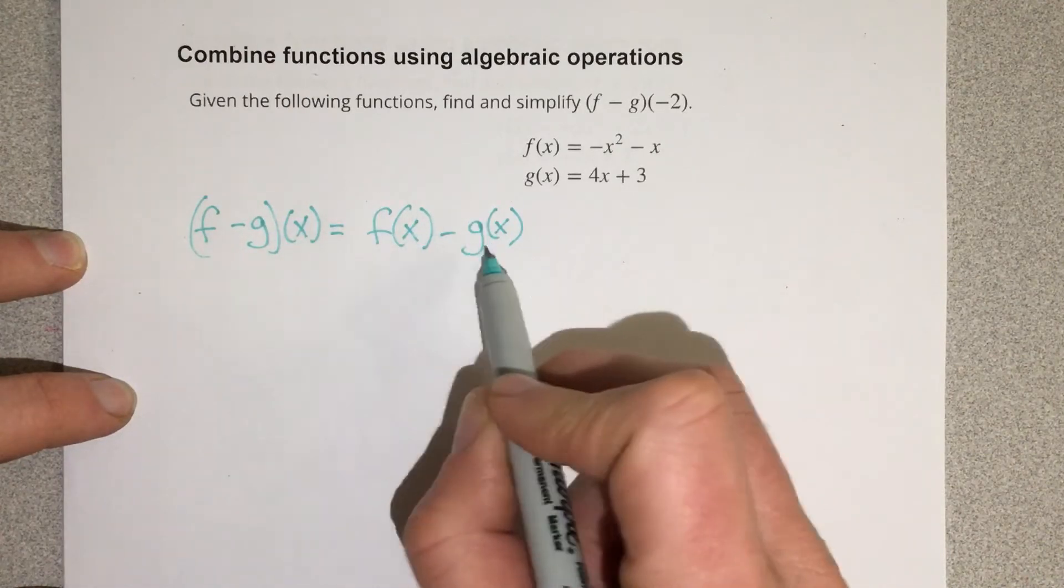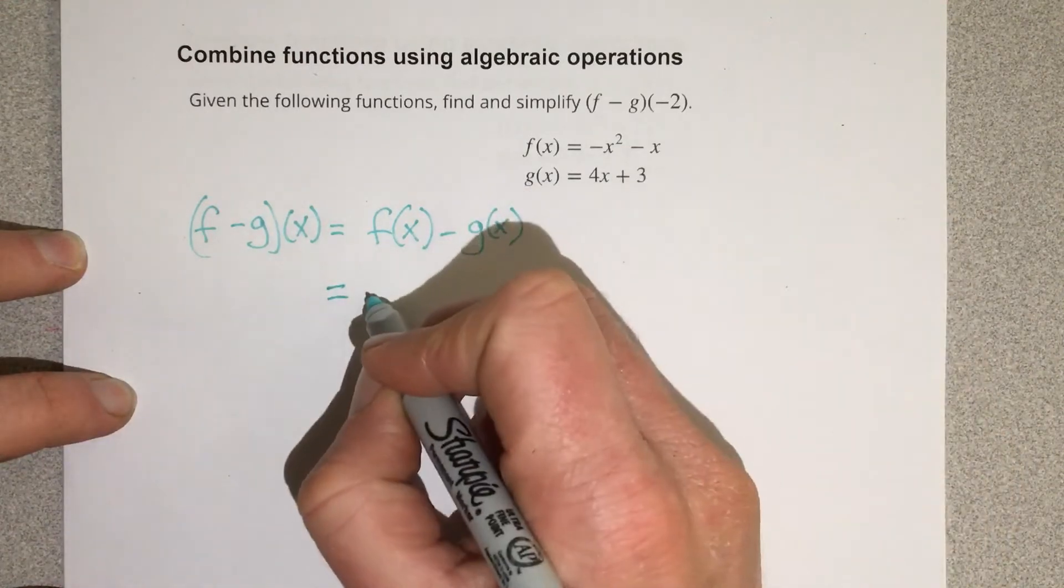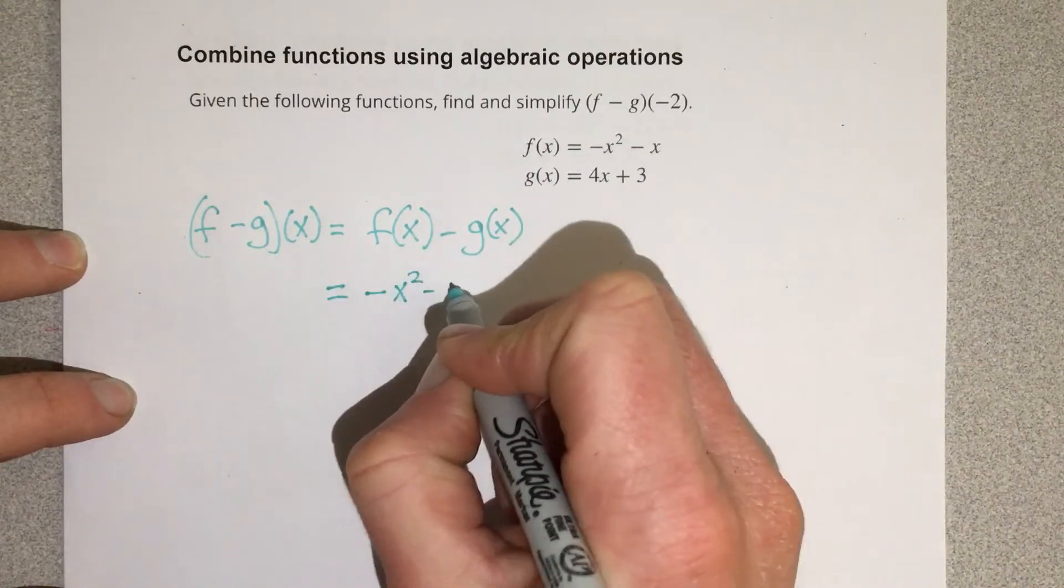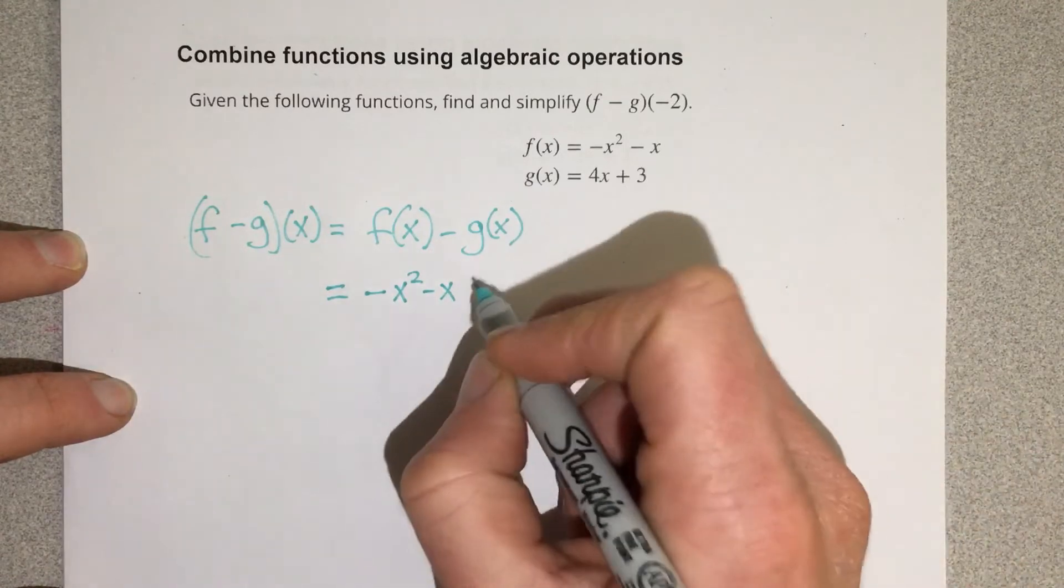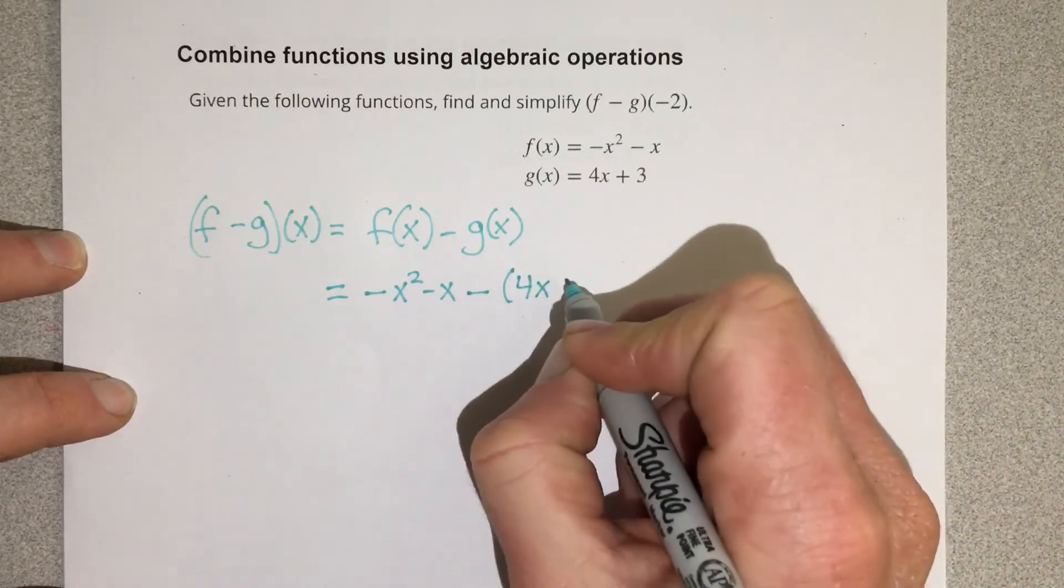Because that's what this is implying, that we have these two functions being subtracted with an input of x, so we can write them separately. And then we can just plug in negative x squared minus x for f of x, and we are subtracting the g of x function, which is 4x plus 3.